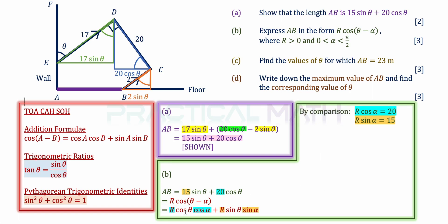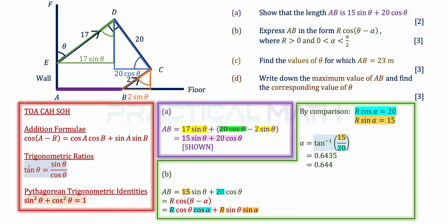Comparing coefficients: the cos theta terms give R cos alpha = 20, and the sin theta terms give R sin alpha = 15. To find alpha, we divide the second equation by the first: sin alpha over cos alpha equals tan alpha, the R cancels, and taking the inverse tangent of 15 over 20 gives alpha = 0.644 radians to 3SF. It is advisable to keep 4 or 5 decimal places to avoid approximation errors later.